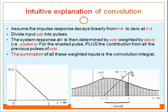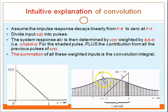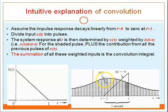Assume the impulse response H(t) decays linearly from 0 to 1. You divide S2(t) into several pulses. The system response at time T is then determined by S2(t) weighted by H(t minus tau) — in other words, it is the multiplication of S2(t) times H(t minus tau). The shaded pulse plus the contribution from all previous pulses of S2(t), that is, the summation of all these weighted pulses, is actually the convolution integral.